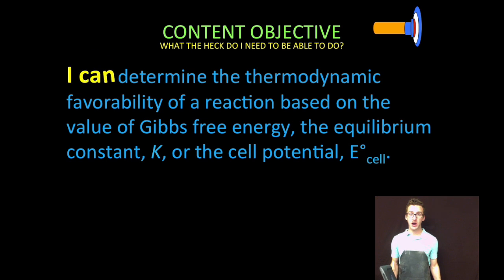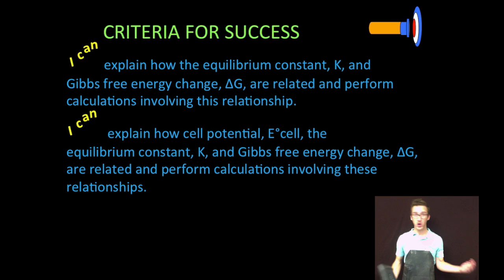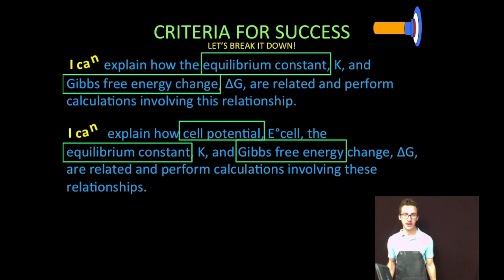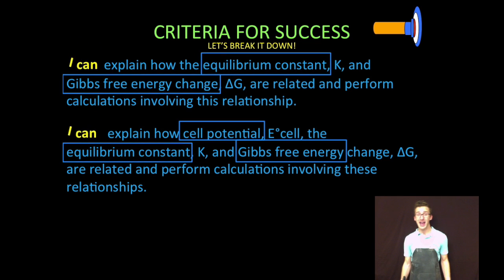Now we've already talked about relating Gibbs free energy to cell potential, this one just takes us one step further and includes that equilibrium constant. So what are we gonna do? Explain how equilibrium constant and Gibbs free energy are related and perform calculations involving that relationship. Then we're gonna talk about how cell potential, the equilibrium constant, and Gibbs free energy are related and do some more calculations involving those relationships.